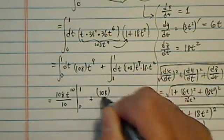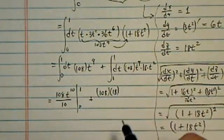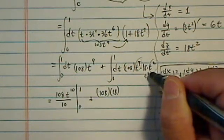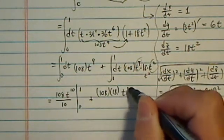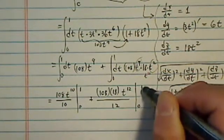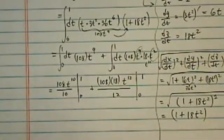On this side, we have 108 times 18, let's say t to the 11th inside the integral, so when I come out, I would have t to the 12th divided by 12, 0 to 1. Almost there.